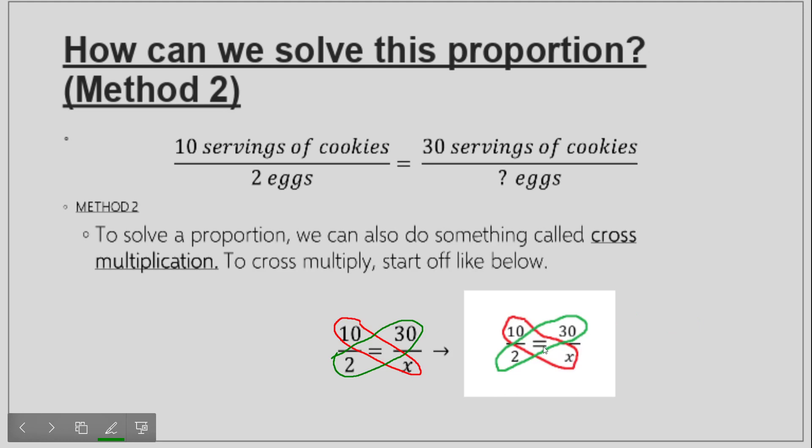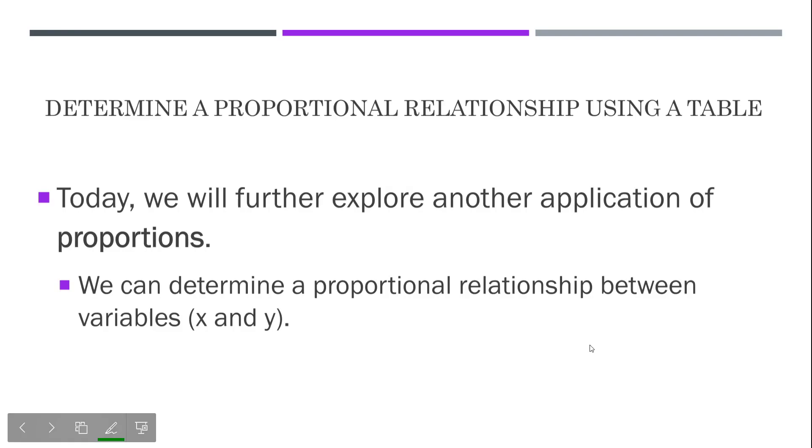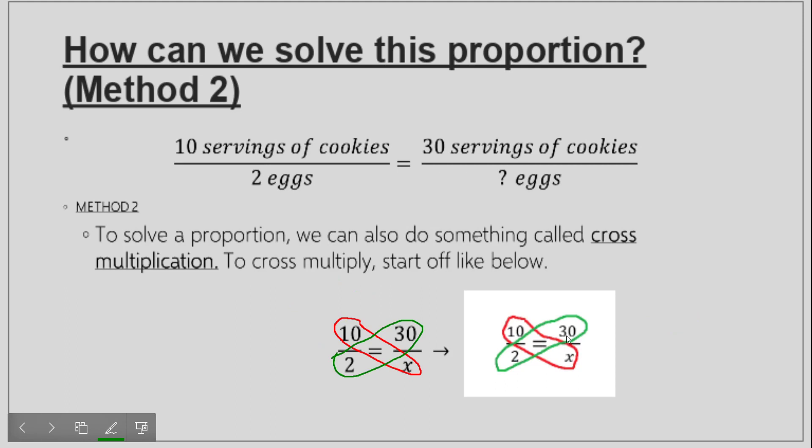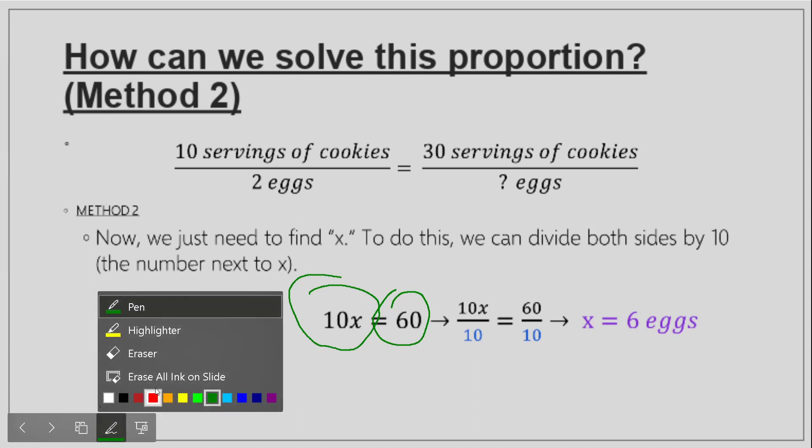We're trying to find out how many eggs we need to make thirty cookies. If we know that two eggs will make us ten cookies, well, to do that we can set up a proportion like we see here. And then you can cross multiply. Alright, ten times x. So you see here, ten times x. And then two times thirty. We're going to set ten times x equal to two times thirty. That's what you're going to see on the next slide. So, ten times x is just ten x.